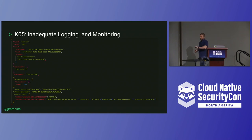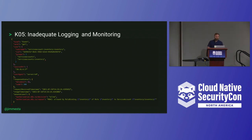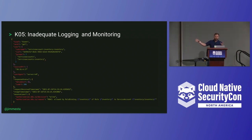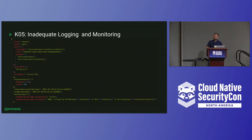The Kubernetes API audit log entry has a lot of things ready for a security practitioner to utilize and start detecting anomalous behavior. The last two lines of this log entry — this event entry — are decisions and reasons spit back from the Kubernetes API via RBAC: 'I allowed this request because of this RBAC policy.' You can also see the source IP address, the user agent, and the timestamp. These things tell the story of what's going on in the cluster at any given moment.